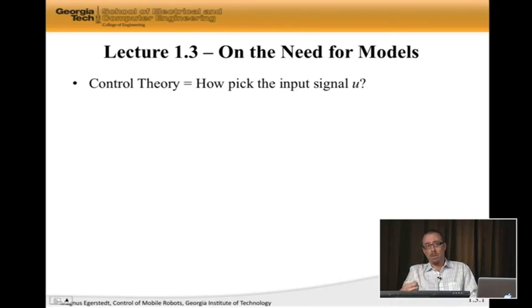Because if you remember, the question in control theory is really how do we pick the input signal U? So U takes the reference, compares it to the output, the measurement, and comes up with a corresponding course correction to what the system is doing.